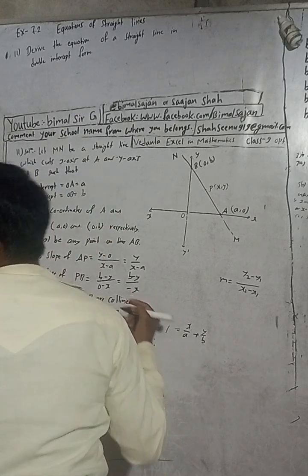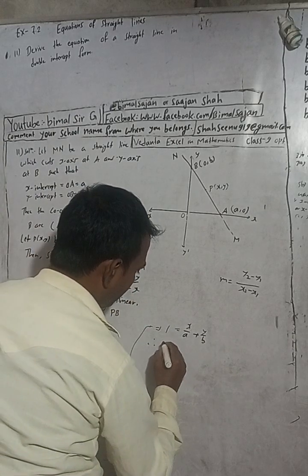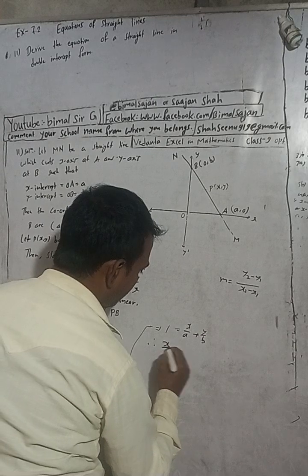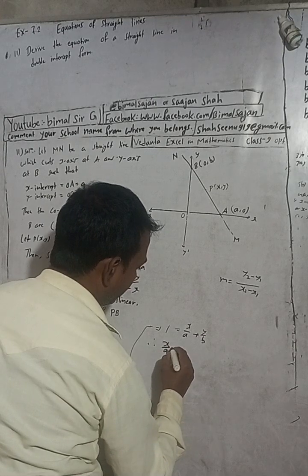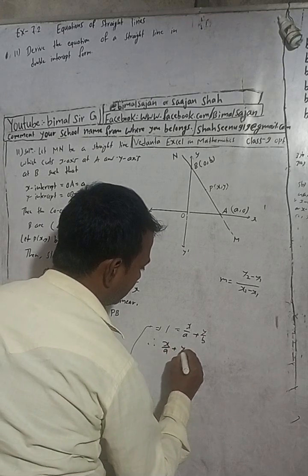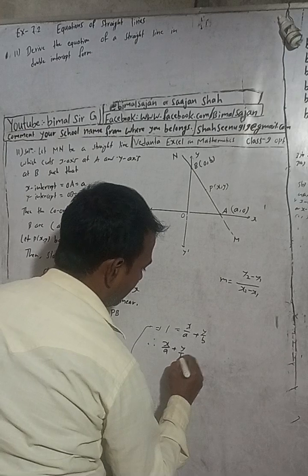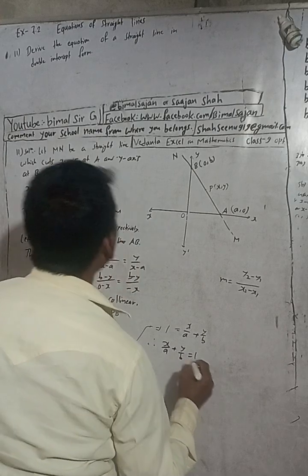Therefore, reversing the sides, the equation is: x/a plus y/b equals 1. This is the derived equation of the straight line.